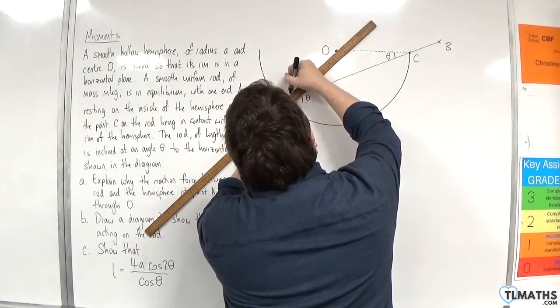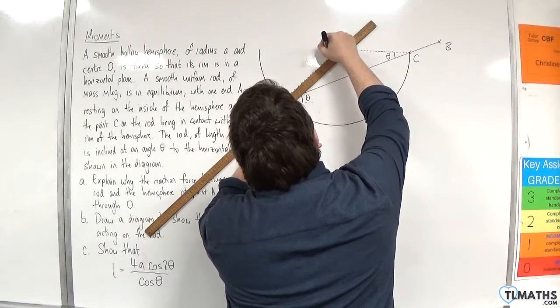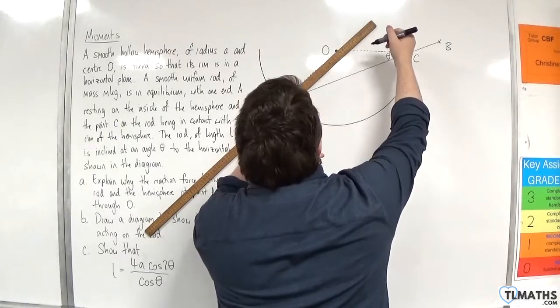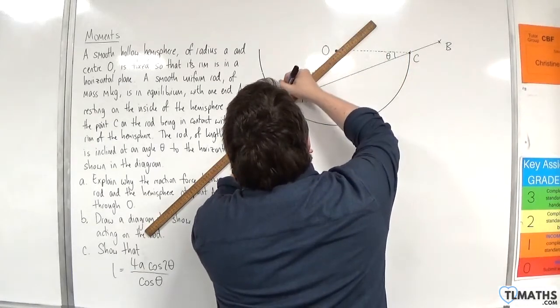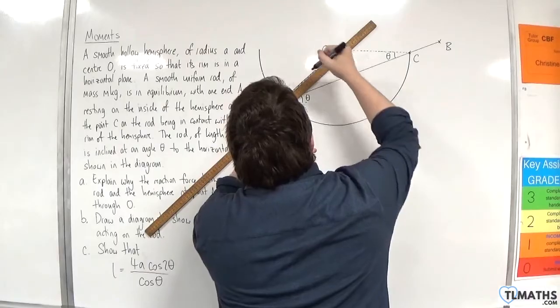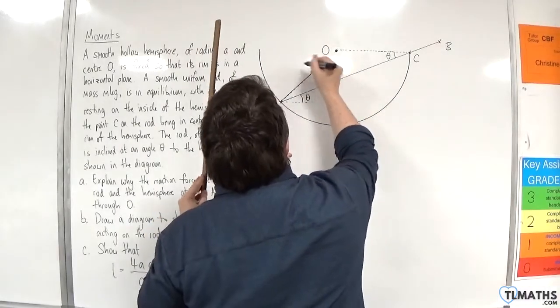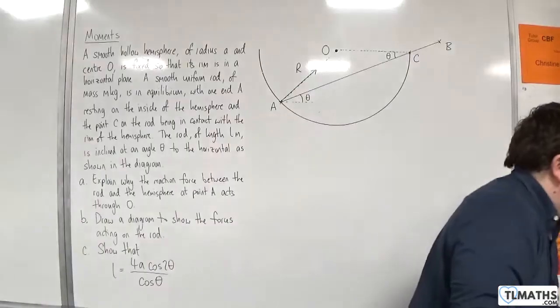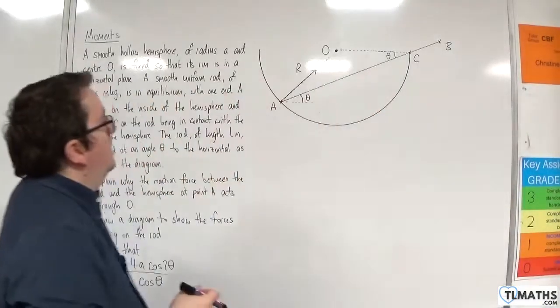I'll just do a dash line to the origin because that is itself a radius. So this is going to be my normal reaction force, R.